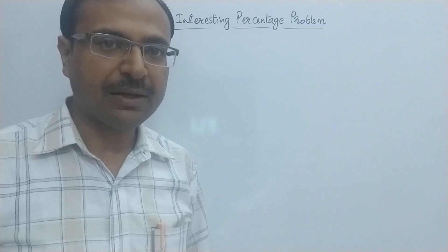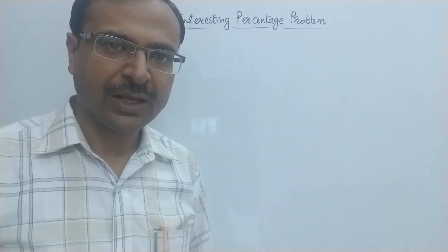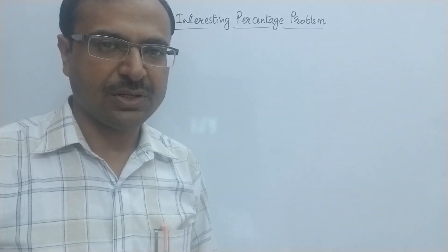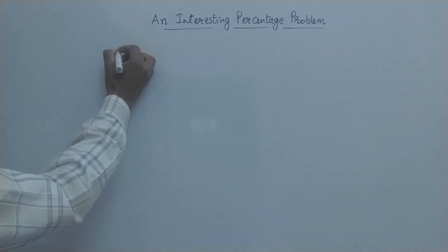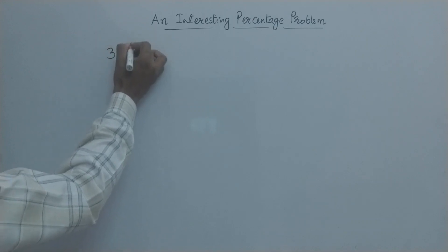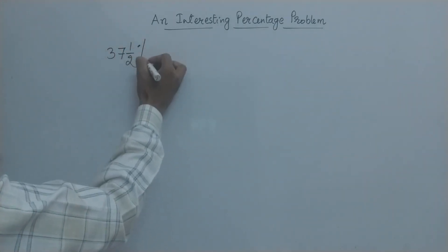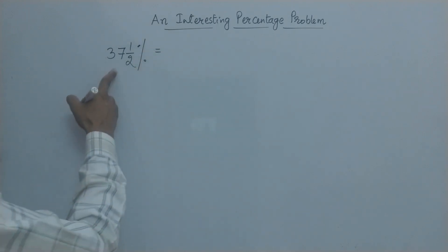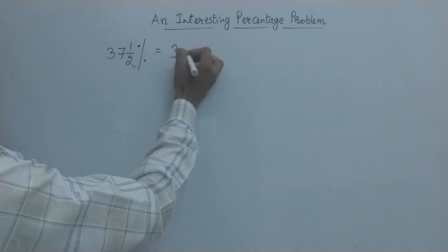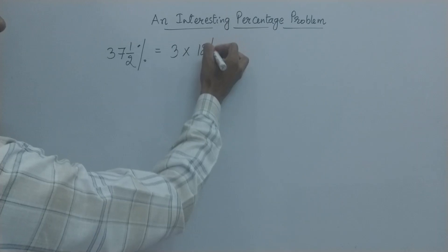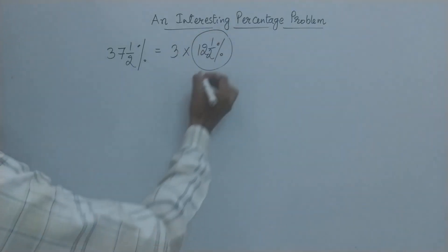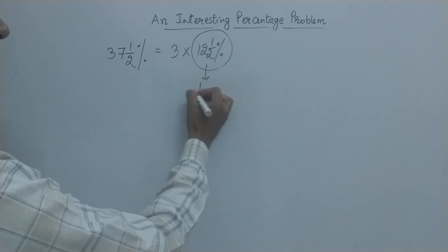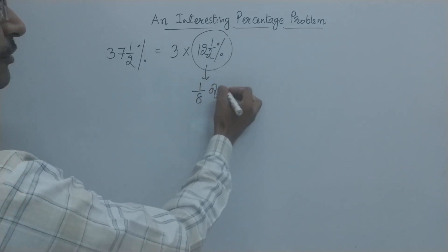One of the percentages which is often asked in competitive exams is 37.5%. Now when we talk of 37.5%, you can relate this with 3 times 12.5%. And why we are relating it with 12.5%? Because this is 1/8th of 100.